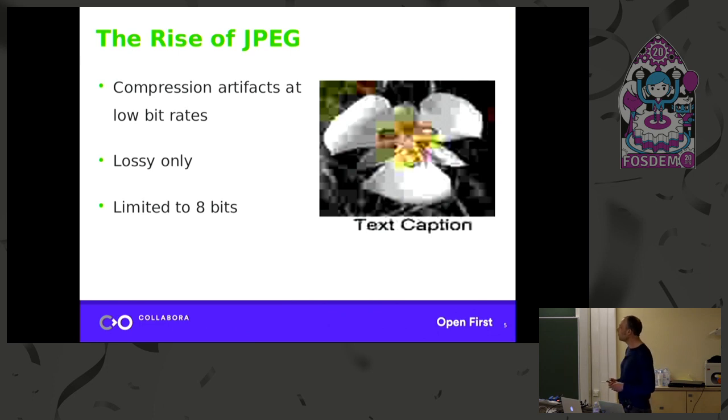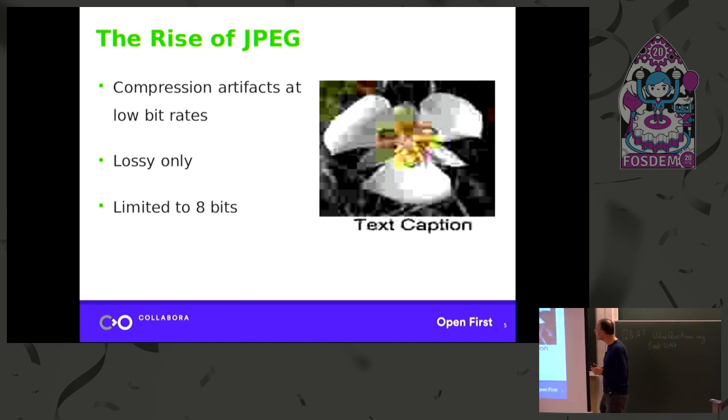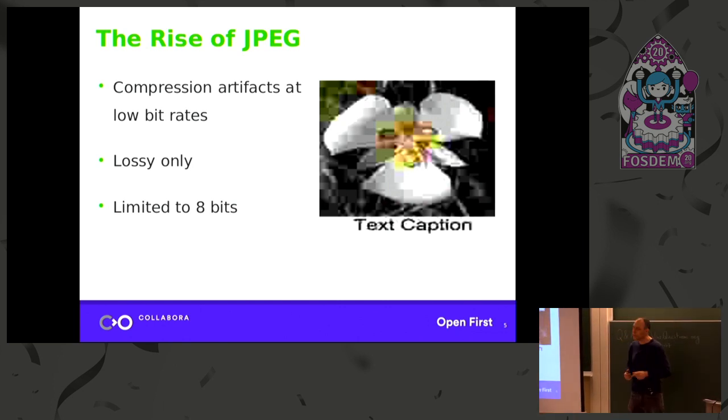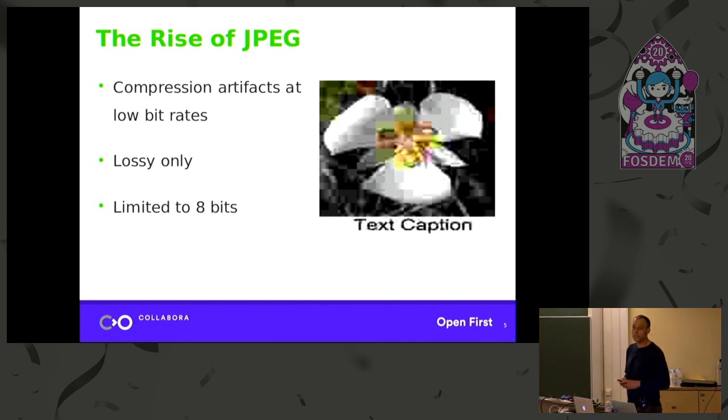So here you have, on the right, a picture of a flower. This is about a one bit per sample image. You can see the block artifacts that you've all seen. Because JPEG uses an 8x8 pixel block to do its compression, when you get very low bit rates, you start to see the boundaries around the pixel blocks. So that's a big problem. Another issue is that it's only lossy. So if you need lossless compression, you can't use JPEG. There is a lossless standard for JPEG, but nobody really uses it. And it's a completely different codec framework, which is not ideal. We're also limited to 8 bits. So if you wanted to do medical or remote sensing, you can't use JPEG for that.